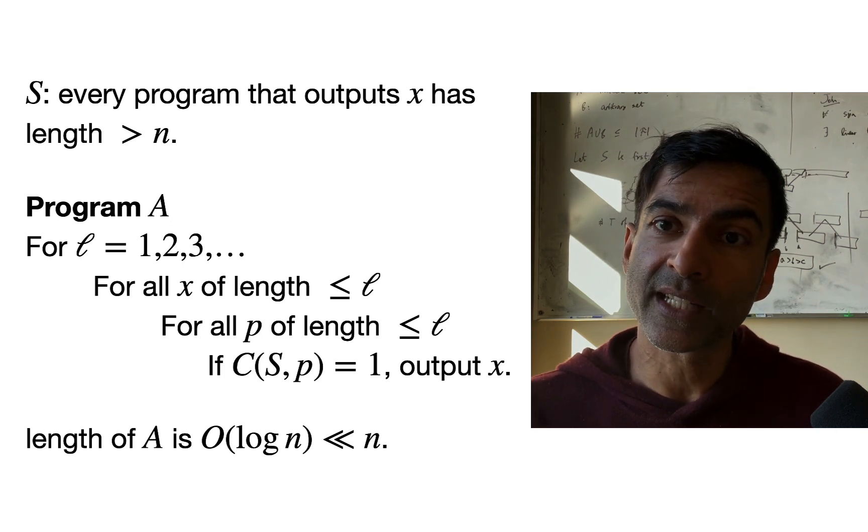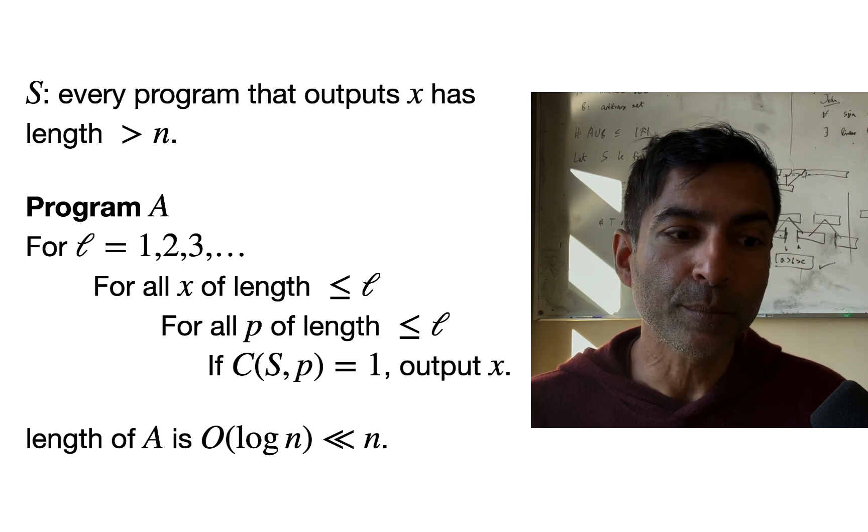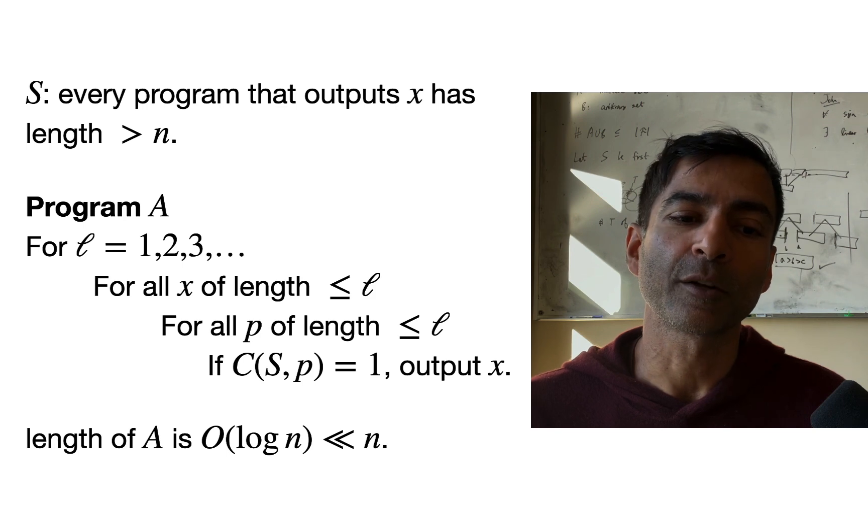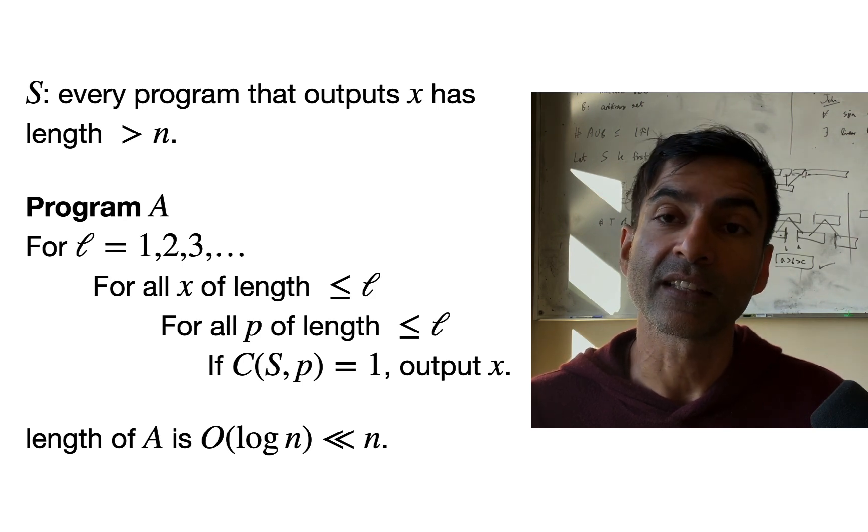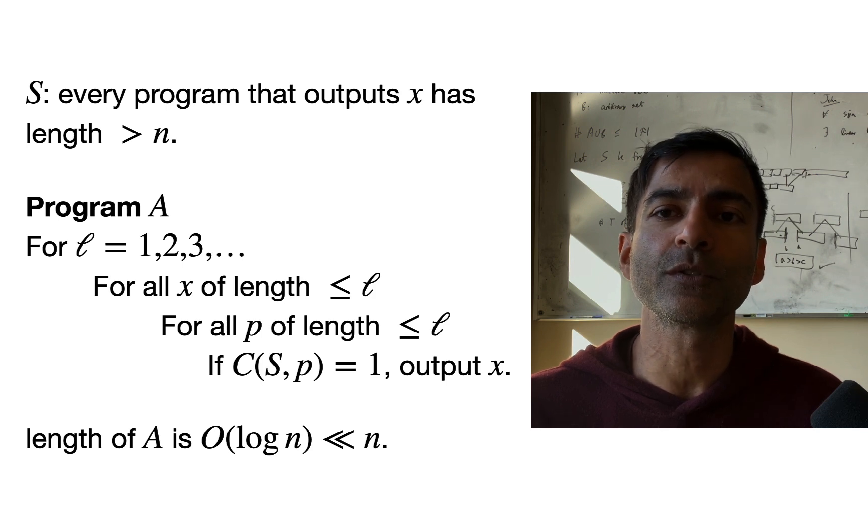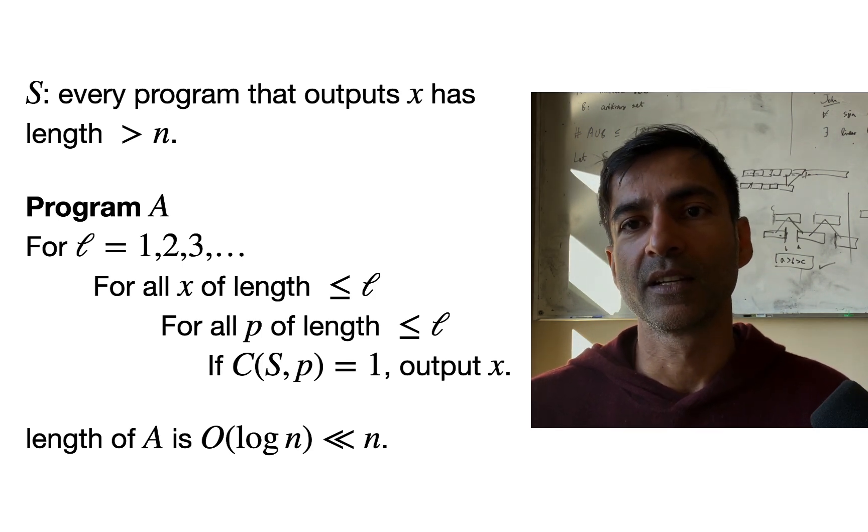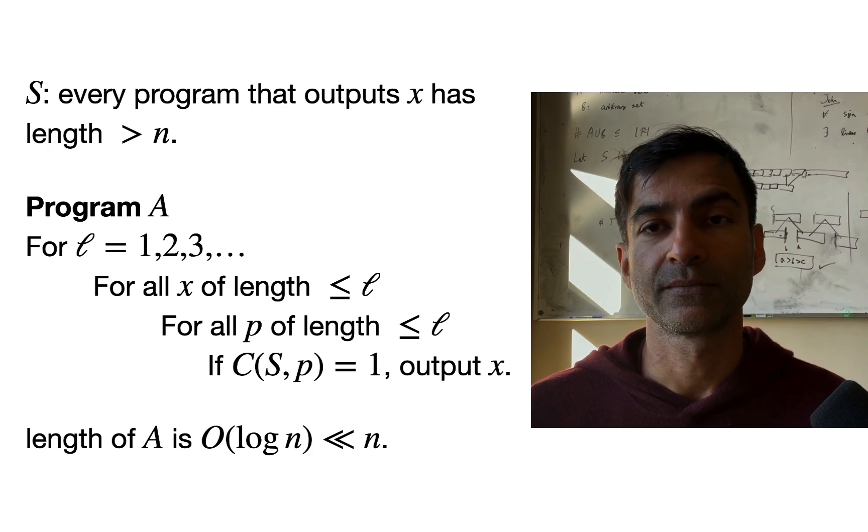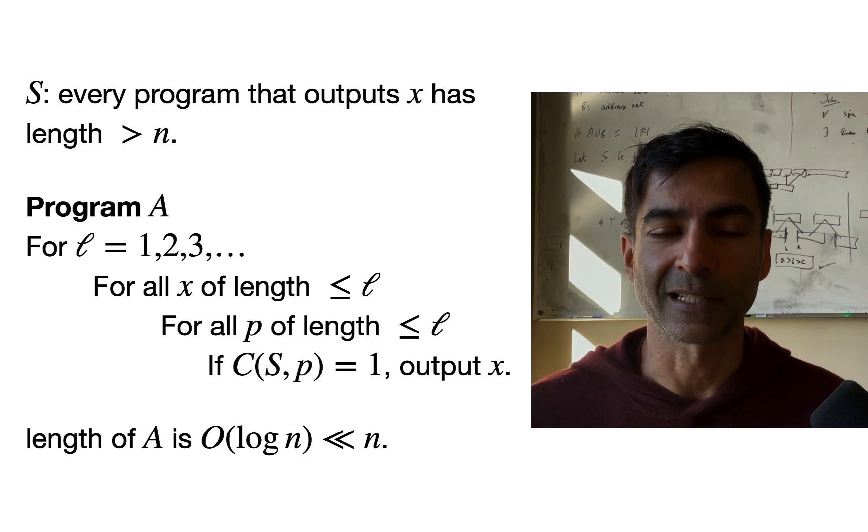Because when it halts with an output, it outputs an x for which it is true that every program that outputs x has a length bigger than n. And the length of this program is less than n. Okay, so if you choose n to be large enough, we are guaranteed that this program will never halt. That's the first claim.